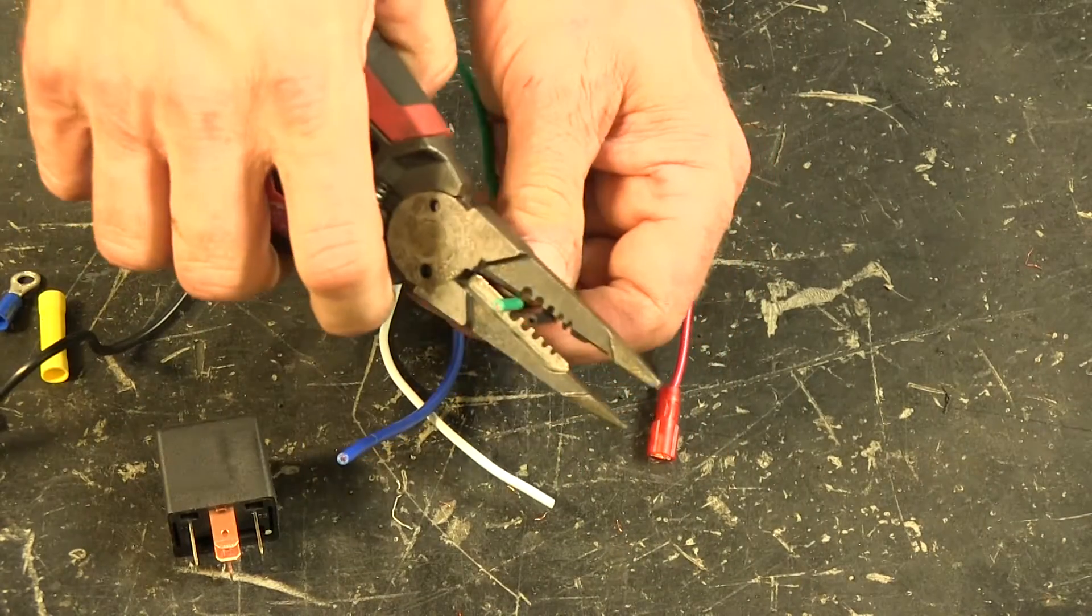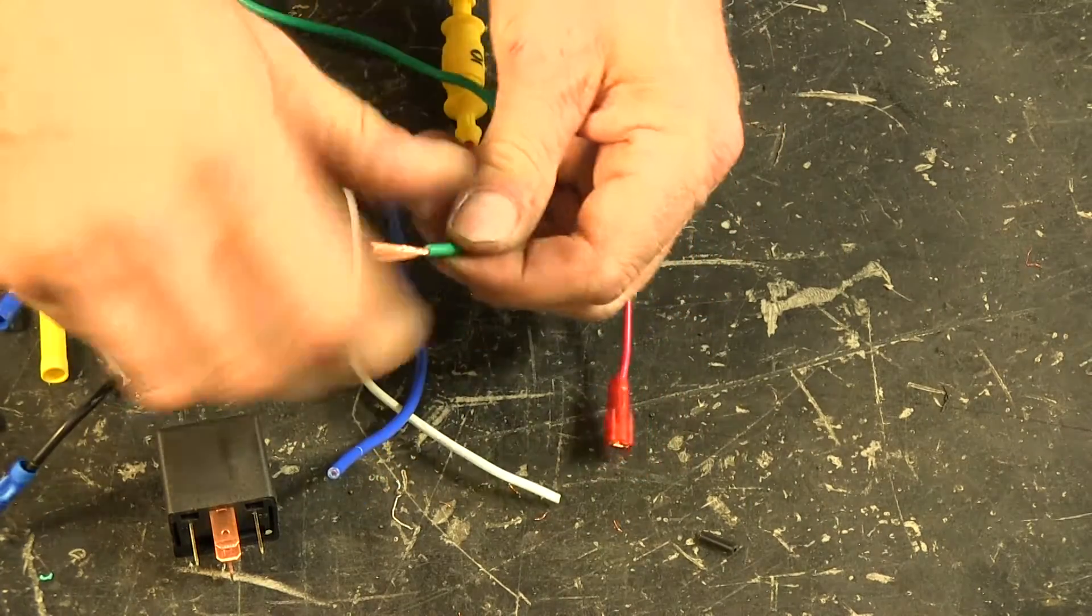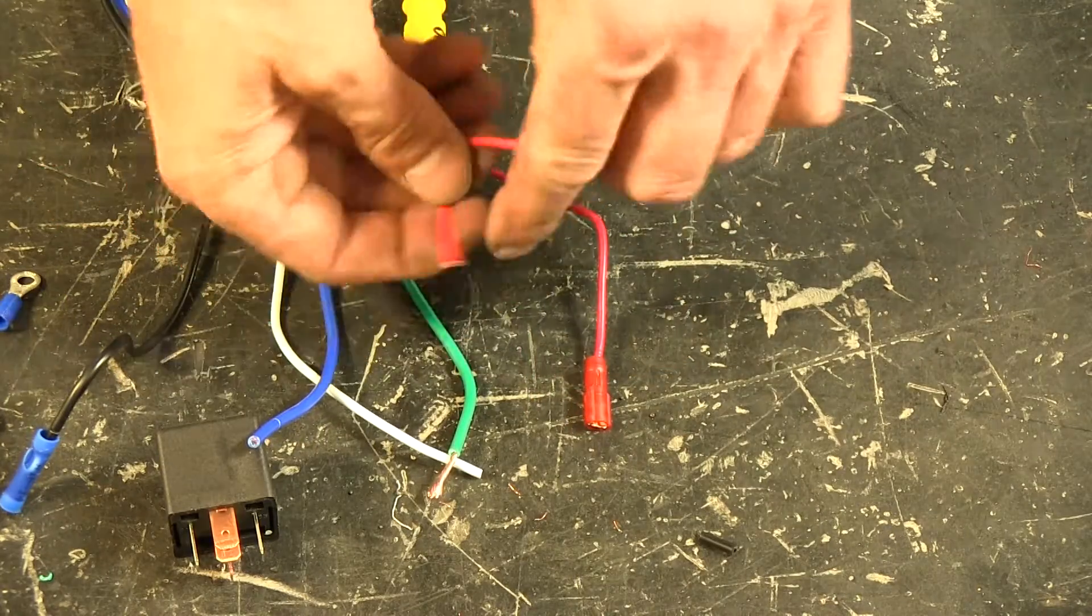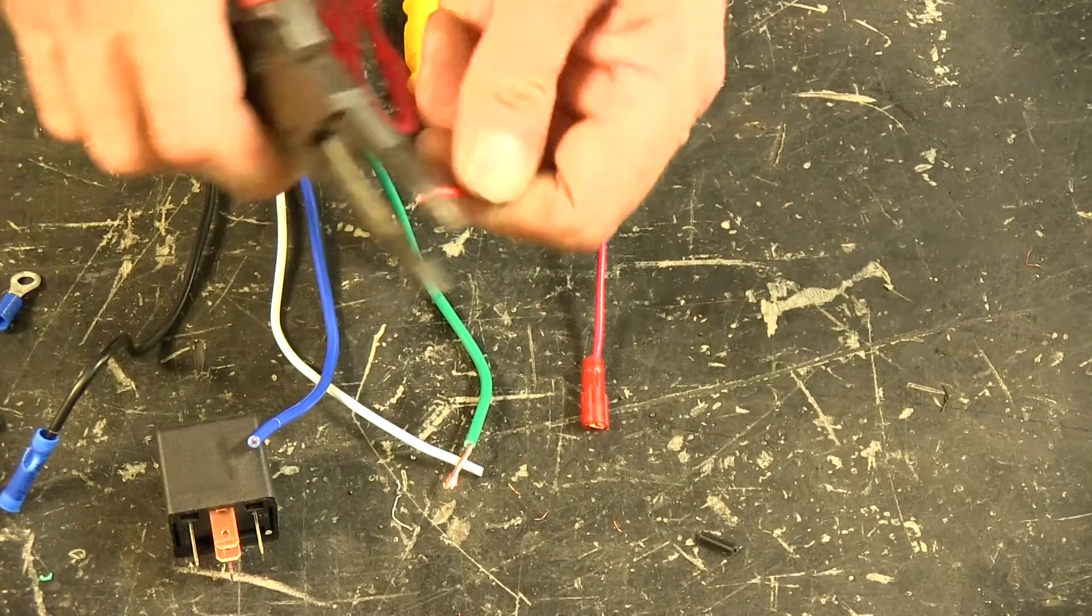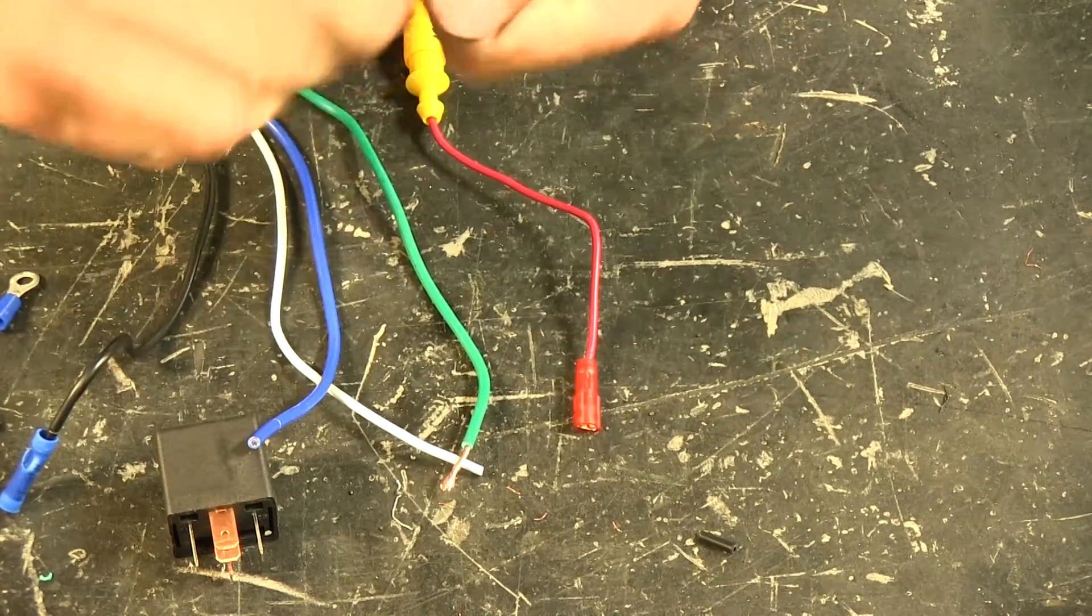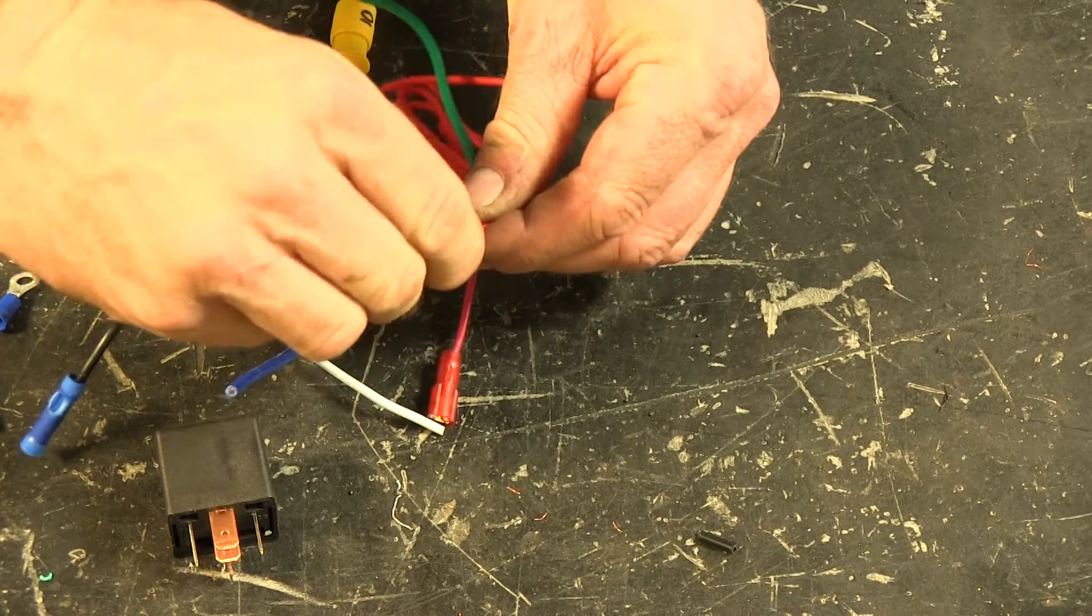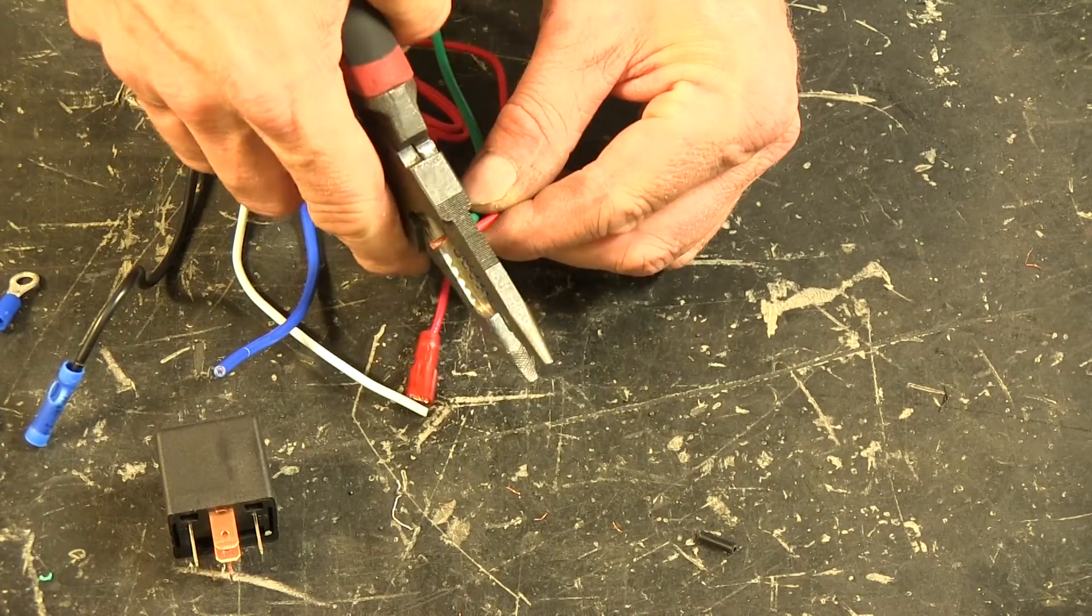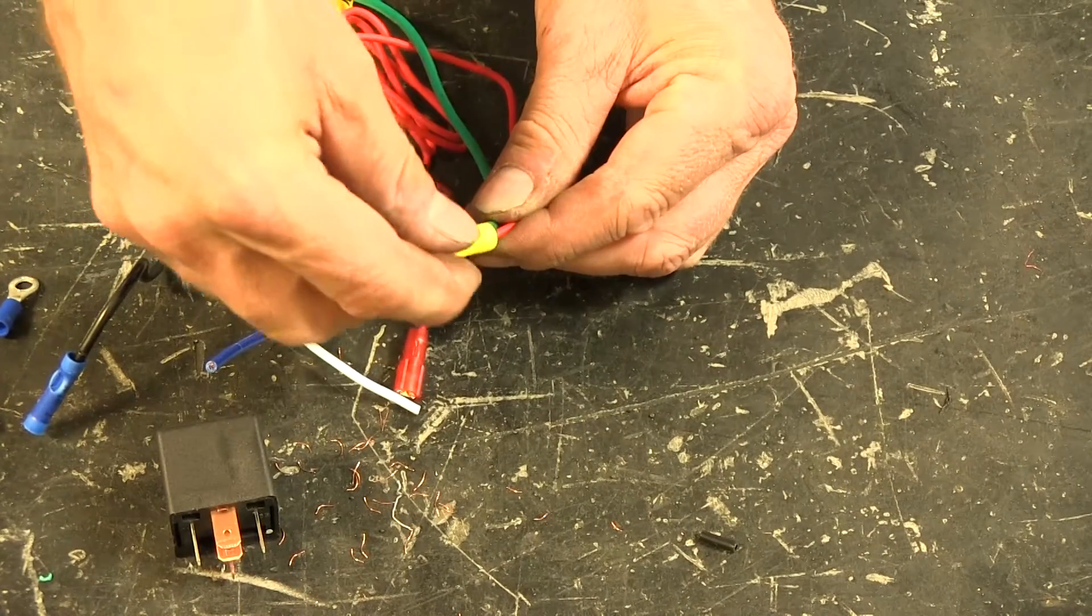We're going to add the blue terminal to it and crimp it in place. Now to our green wire, we've got this little thread wire here. I'm going to actually add it right next to it. We'll twist them together. I'm going to cut off some excess and add the yellow butt connector.